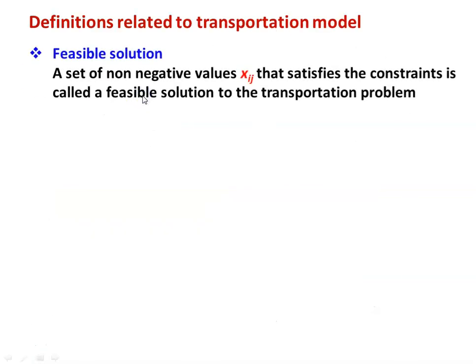Various definitions related to the transportation model: The first definition is feasible solution — a set of non-negative values (xij ≥ 0) that satisfies the constraints is called a feasible solution. The constraints here are the demand of the destination and the supply capacity of the source, both of which are known and given in the problem.